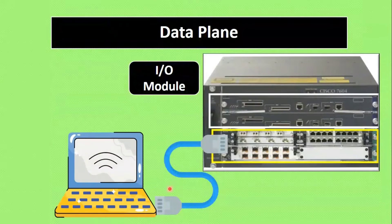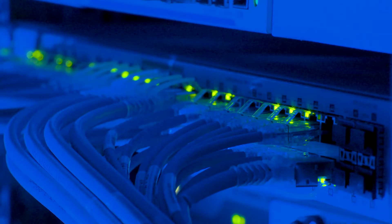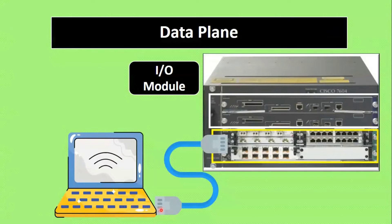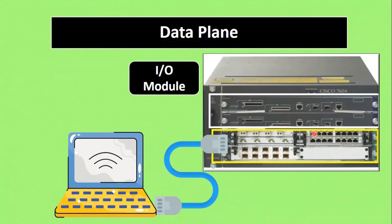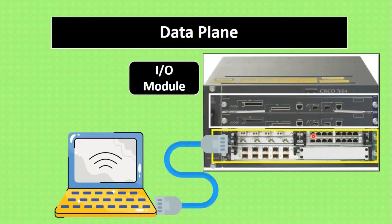Here is an example in detail. We have a traditional switch connected to a laptop with an RJ45 cable. When packets arrive from the laptop to the switch, the data plane processes the packet according to the information and instructions provided by the control plane. The data plane is also known as the forwarding plane or user plane. It handles traffic coming from interfaces — for example, FastEthernet 0/1, 0/2 — connected to laptops or IP phones, sending and receiving packets.